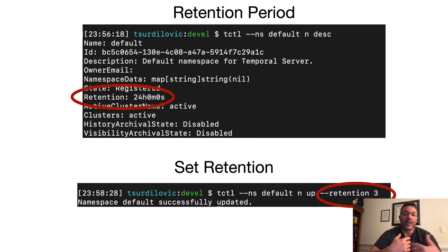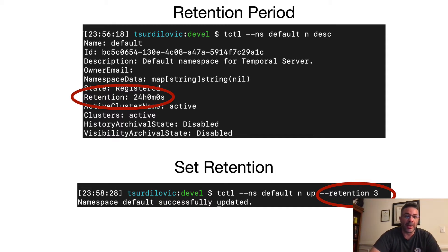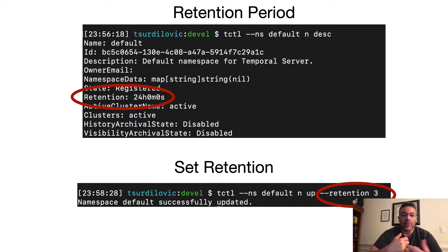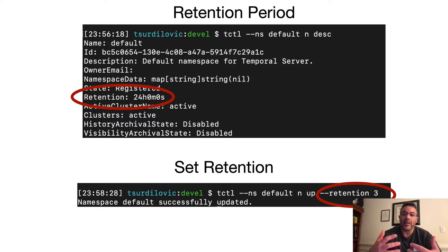There is this thing called retention period. Temporal workflows can run forever — as long as a workflow is executing or in a running state, it can execute as long as you need. However, once a workflow completes, whether that be a successful completion or, in our case, a failure, Temporal has a retention period. The retention period is the amount of time that both your workflow histories, the mutable state, as well as the visibility records, stay persistent until they're deleted.